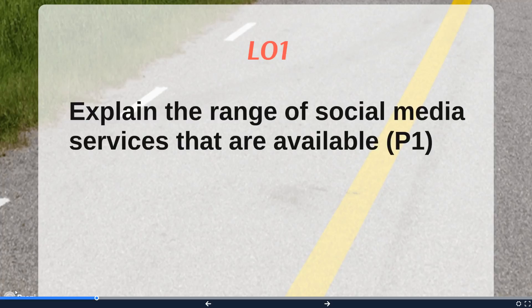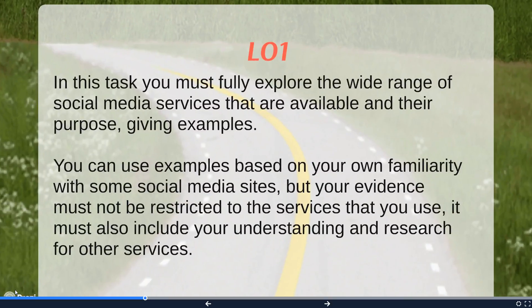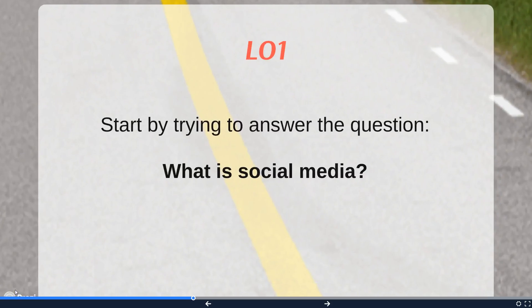Learning Outcome 1 in this unit is to explain the range of social media services that are available. This is the first assignment, which starts with P1. What you have to do is fully explore the wide range of social media services available, their purpose, and give examples. You can use examples based on your own familiarity, but your evidence must not be restricted to services you use — it must also include research into other services. Remember, this first assignment is about how individuals use social media, not businesses.